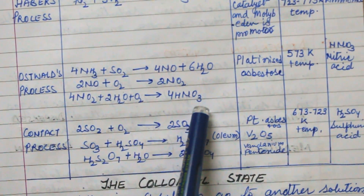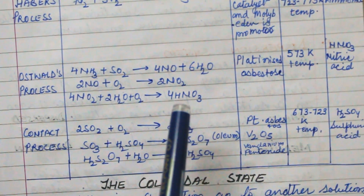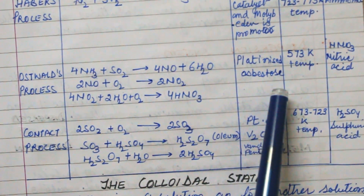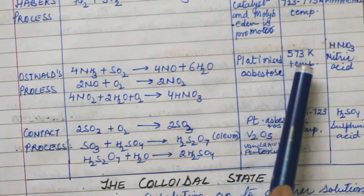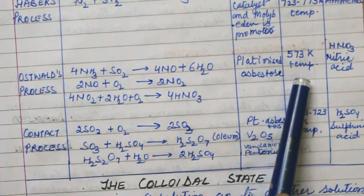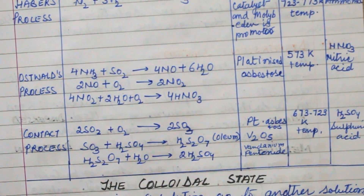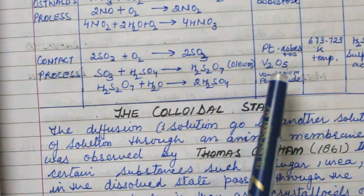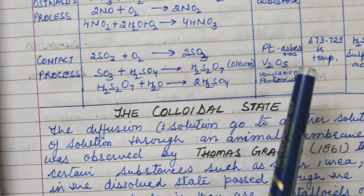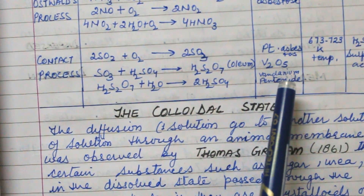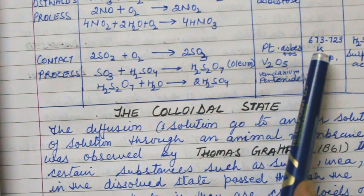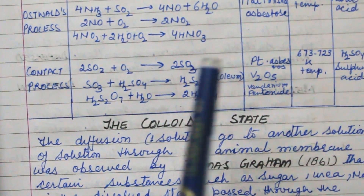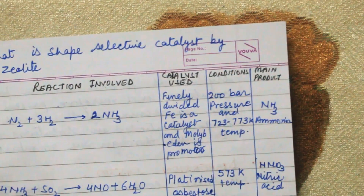Next is the Ostwald process, in which nitric acid is manufactured. Platinized asbestos is used as the catalyst at a temperature of 573 K, and the main product is nitric acid. In the Contact process, H2SO4 is manufactured in the presence of platinum asbestos or vanadium pentoxide (V2O5) as a catalyst at a temperature of 673 to 723 K, and the main product is H2SO4.